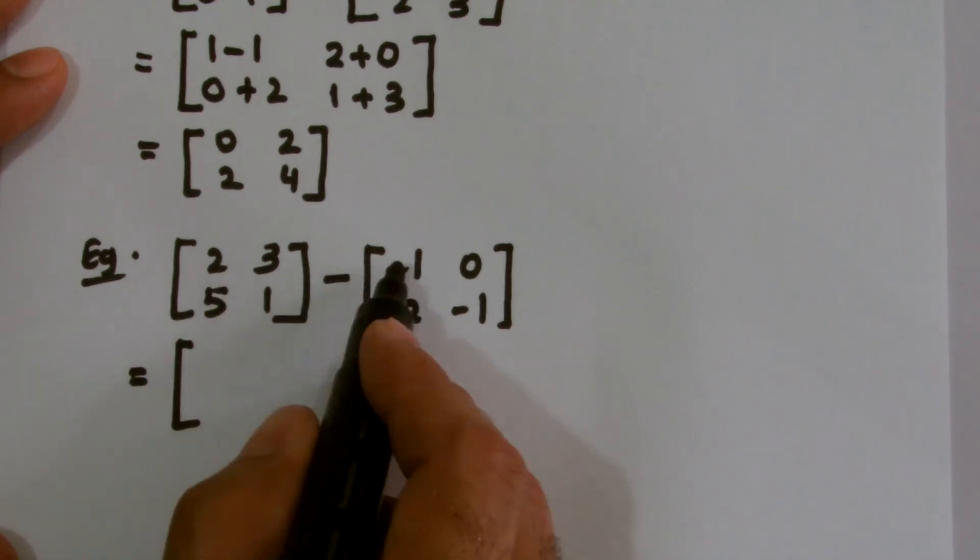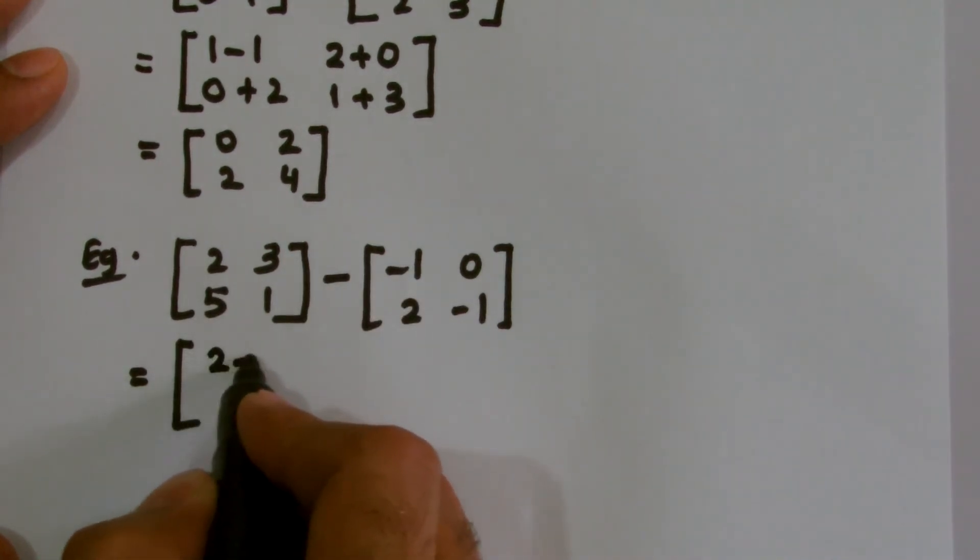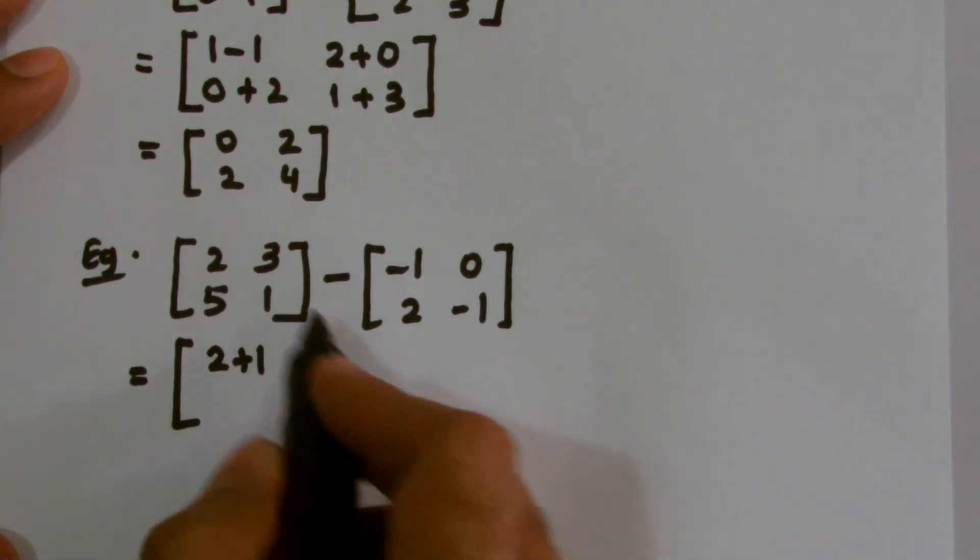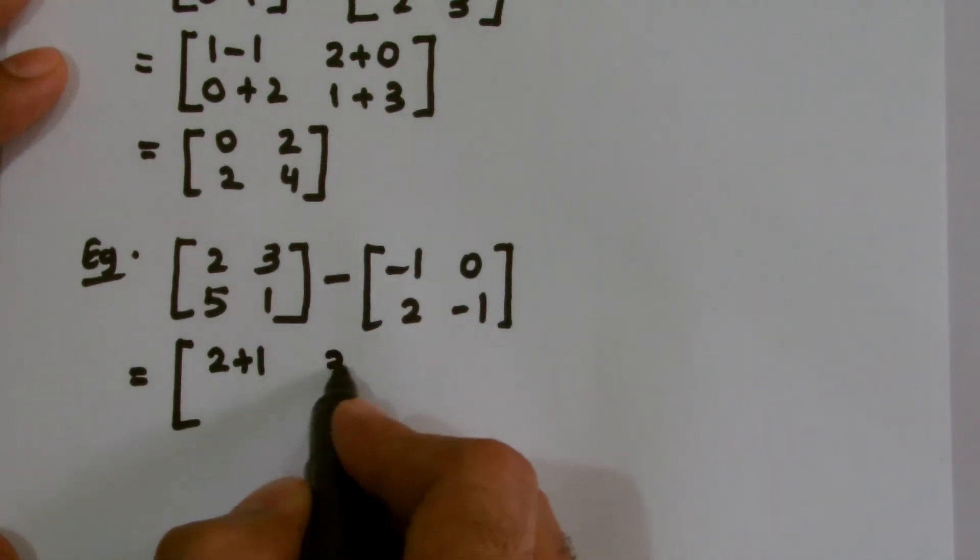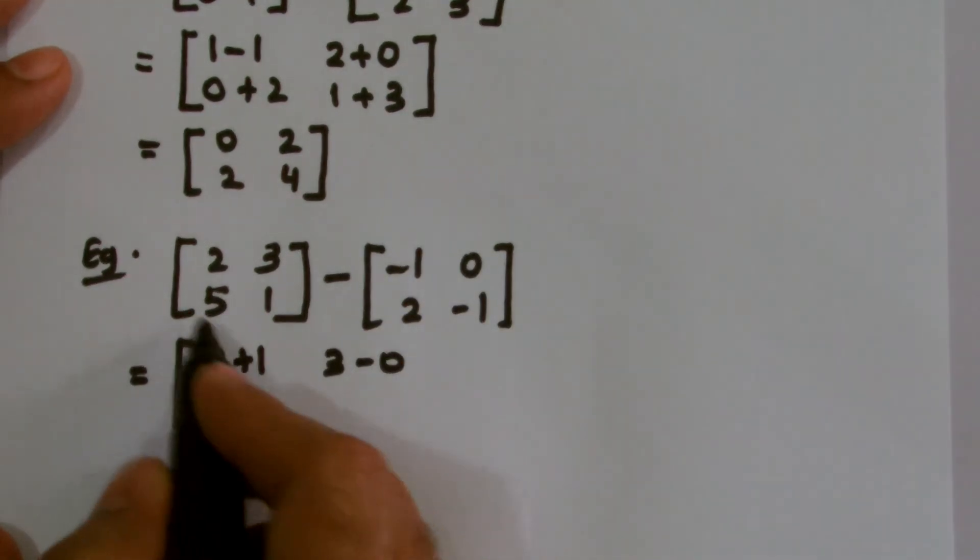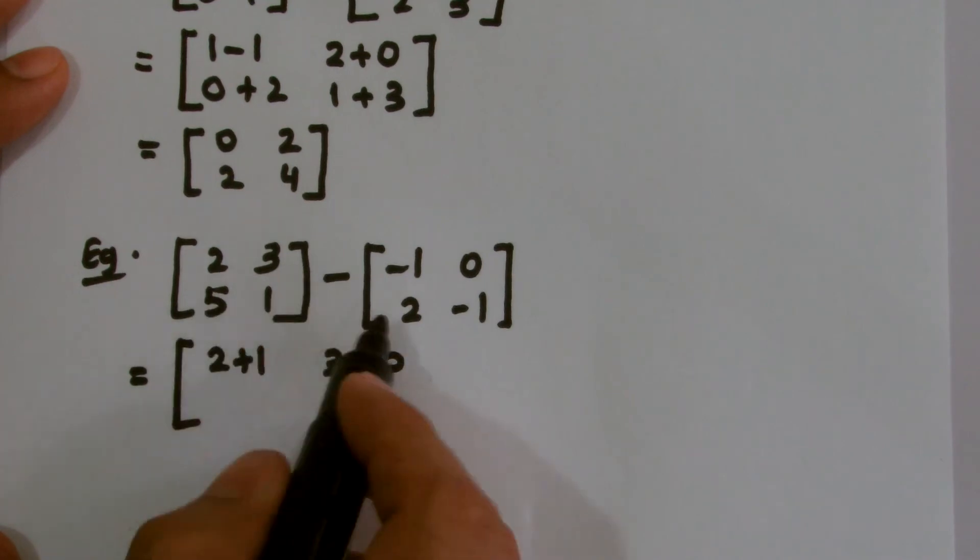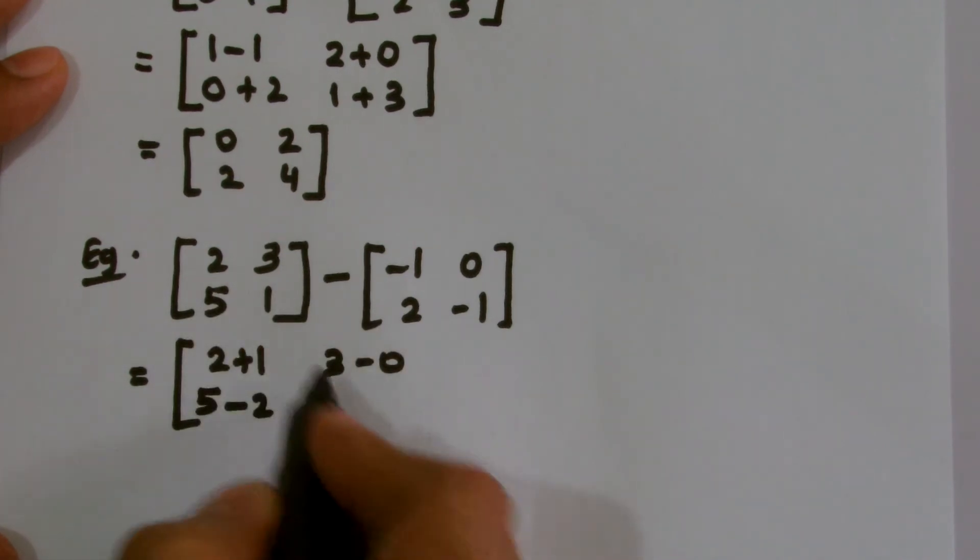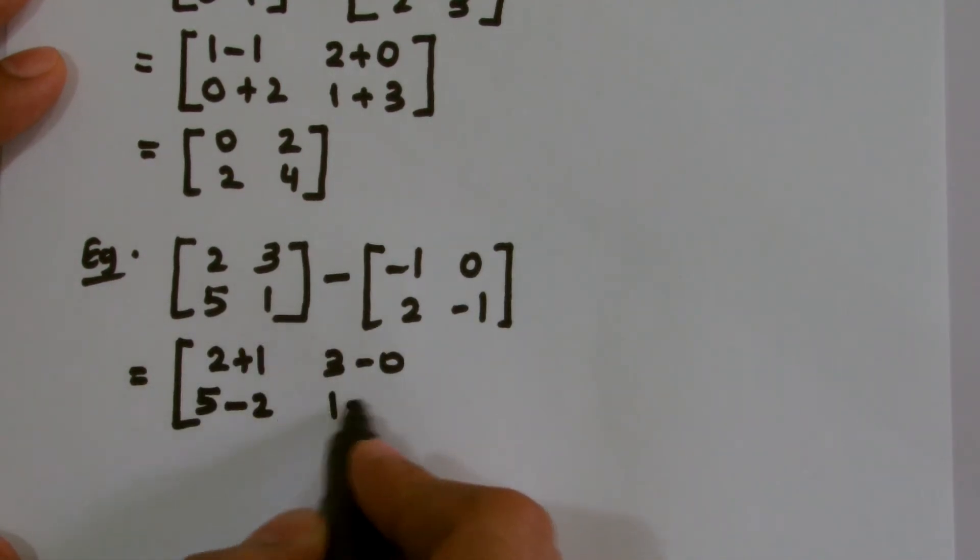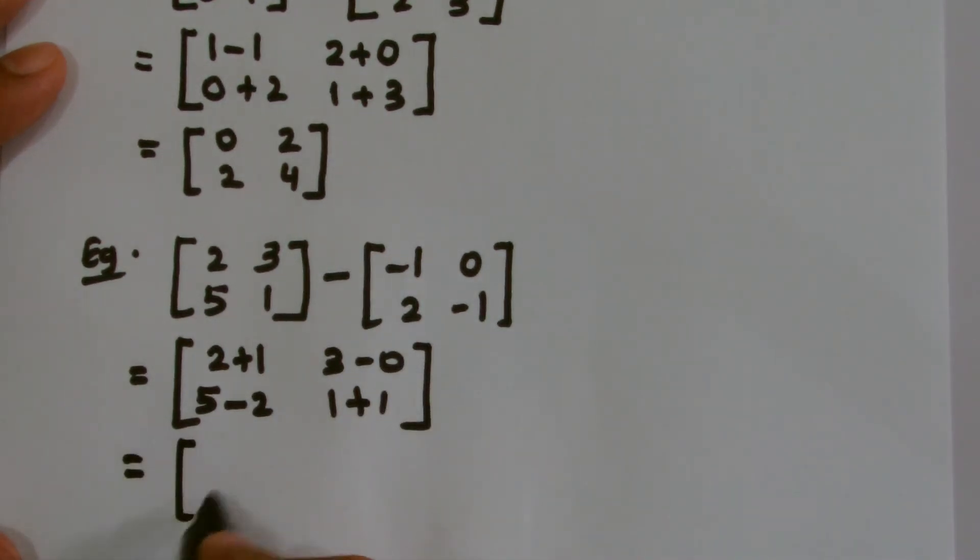So as a result, I get 2 minus minus 1, I get 2 plus 1. 3 minus 0, though it will remain same, 5 minus 2. I have 1 minus minus 1, that makes it 1 plus 1. So as a result, I get 2 add 1 is 3, 5 minus 2 I get 3 again, 3 minus 0 I get 3, 1 add 1 I get 2. So that's my final result.